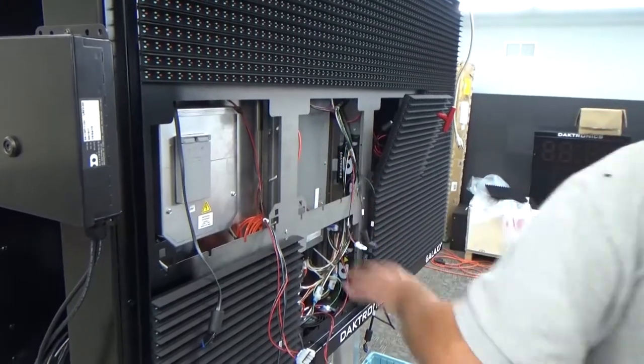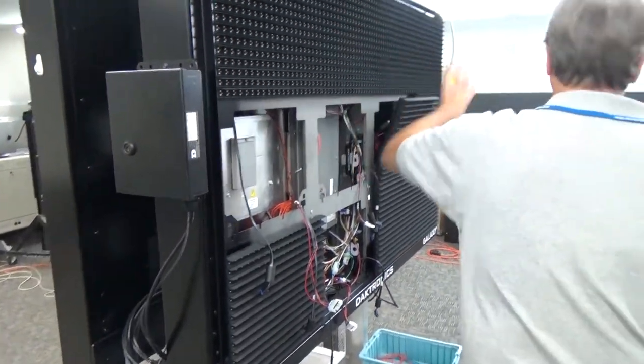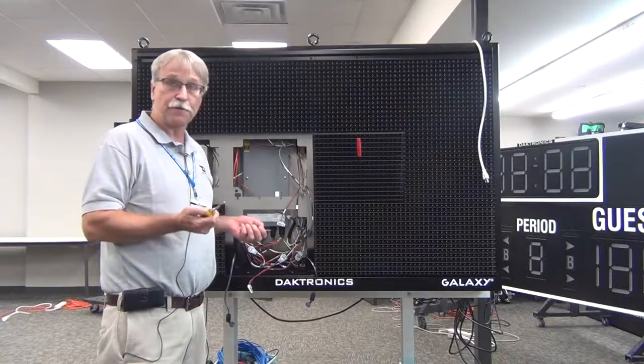In most cases, the controller is behind the second module in the second row from the bottom. Reference the drawings and illustrations in your display manual for further details.